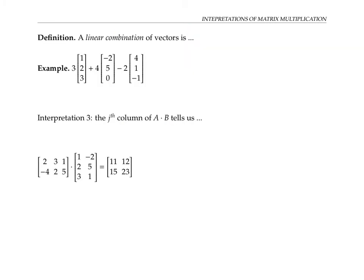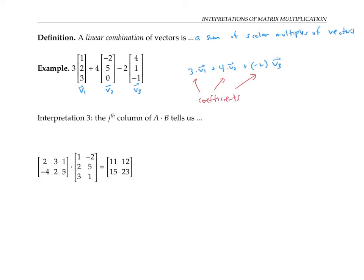Before looking at the third interpretation of matrix multiplication, I want to define a linear combination of vectors. A linear combination of vectors is a sum of scalar multiples of the vectors. For example, given vectors v1, v2, and v3, we can write a linear combination: three times v1 plus four times v2 plus negative two times v3. The scalars three, four, and negative two are called the coefficients in the linear combination.